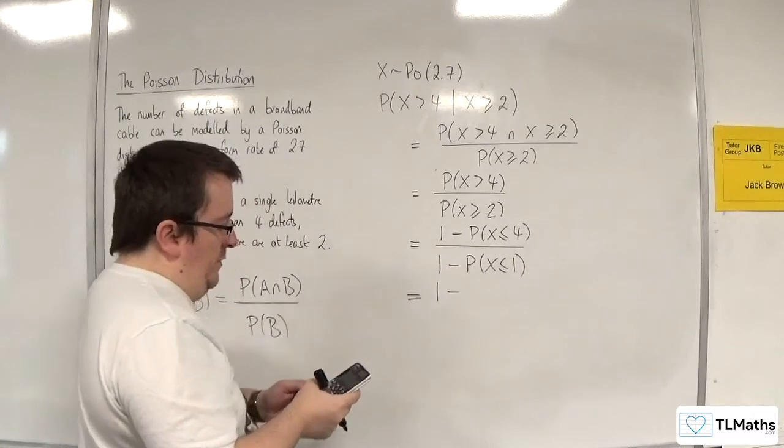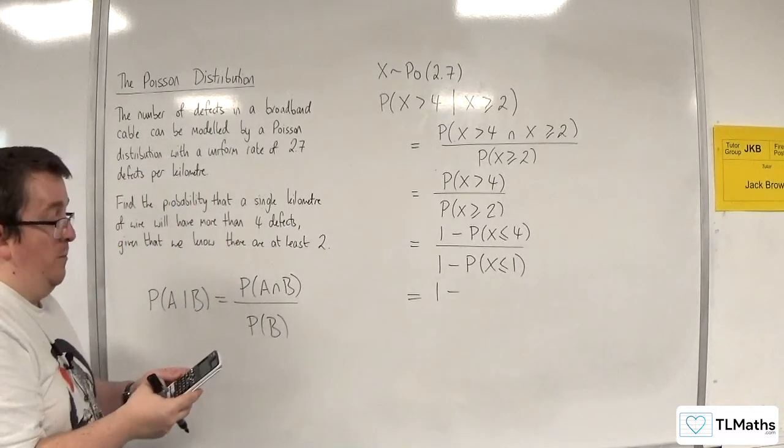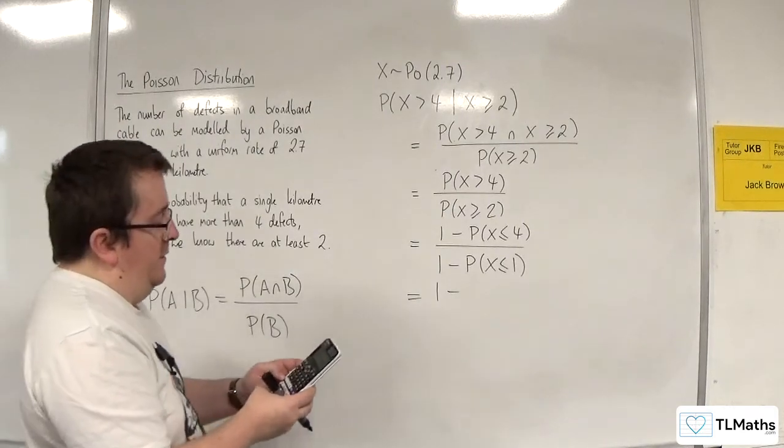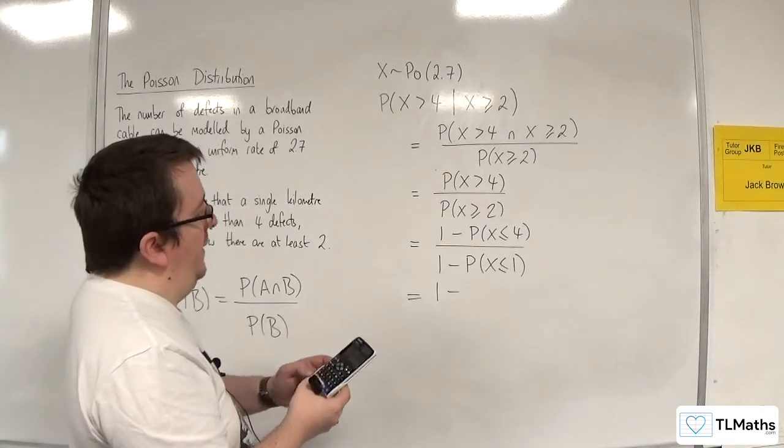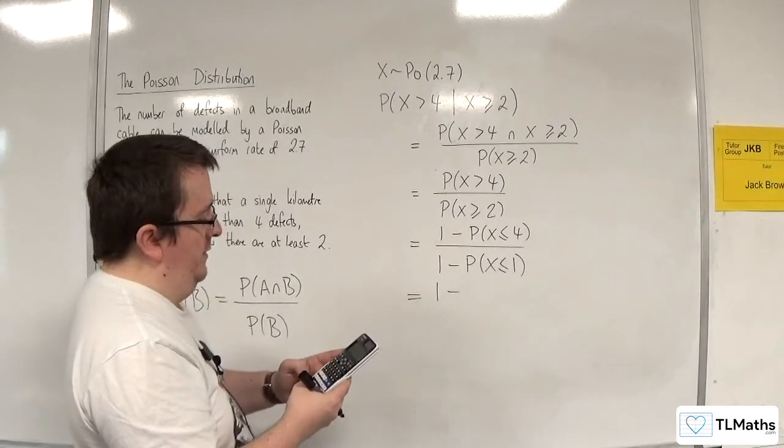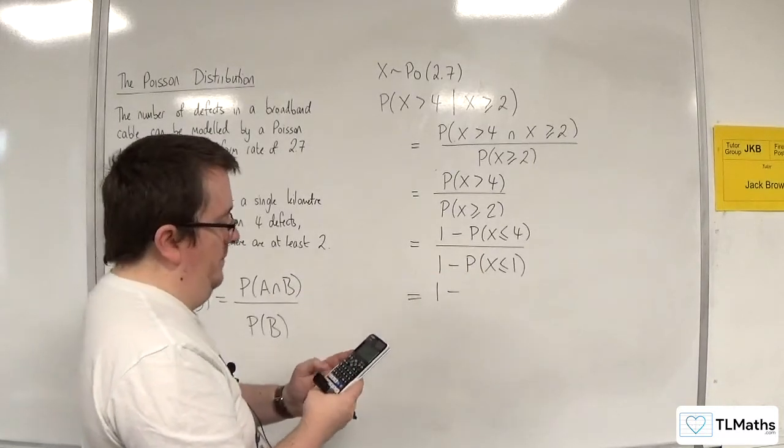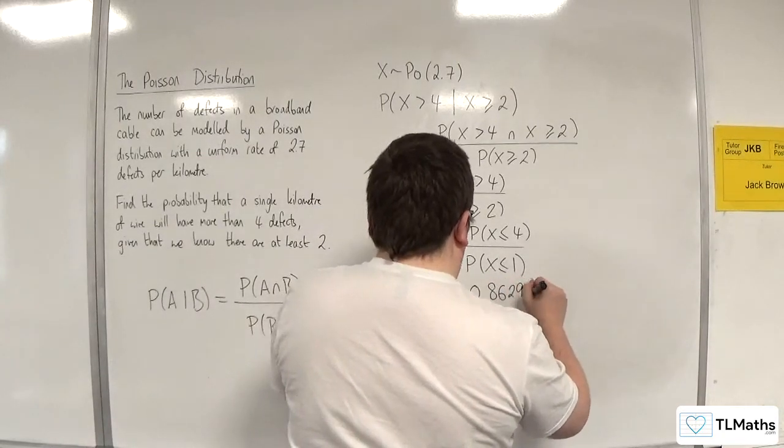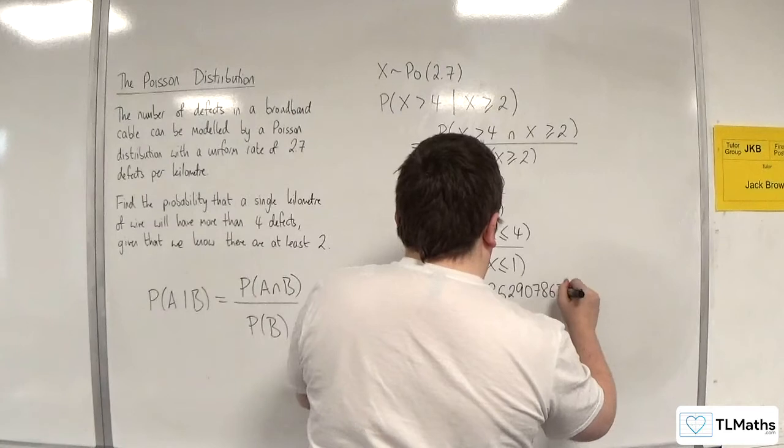So I'm going to go to menu number 7. Scroll down to Poisson CD. Go to variable. So we want X to be 4 to start off with, and lambda is 2.7. So we should get 0.8629078675.